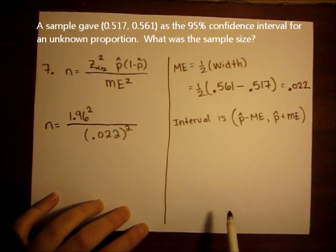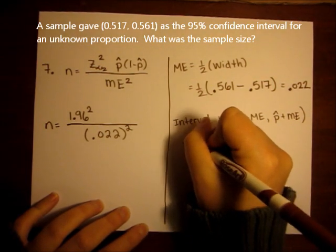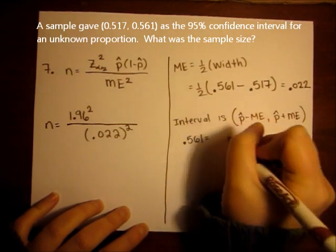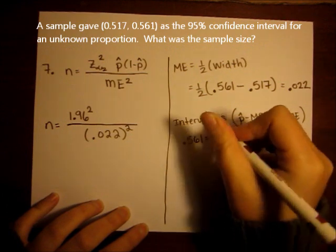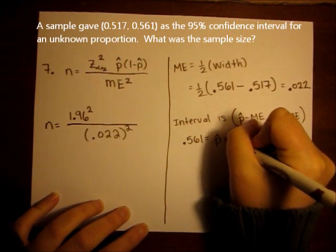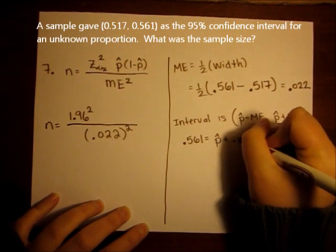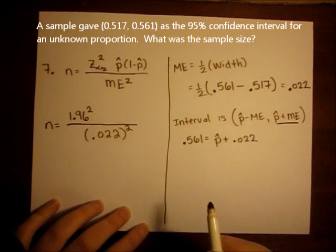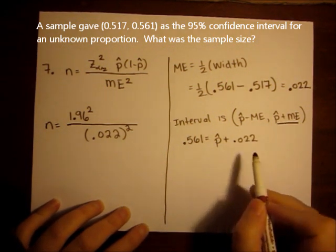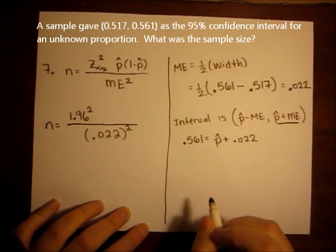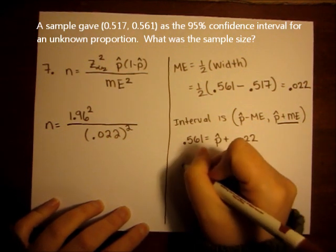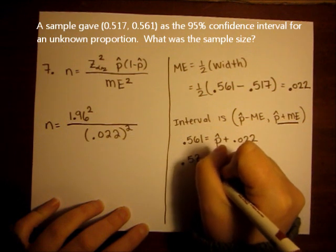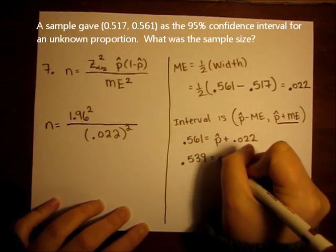So if I look at my larger number, the 0.561, the 0.561 is p hat plus the margin of error. So if I subtract the margin of error, 0.561 minus 0.022, I get 0.539 equals p hat.